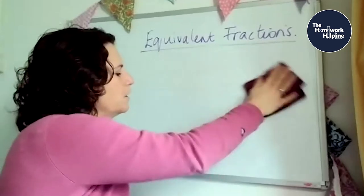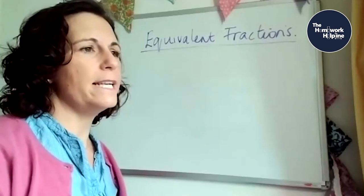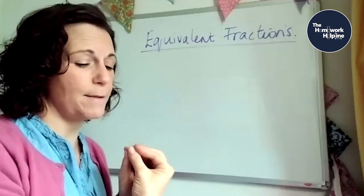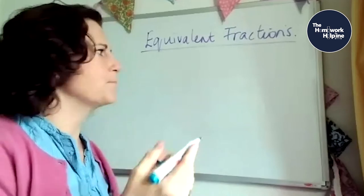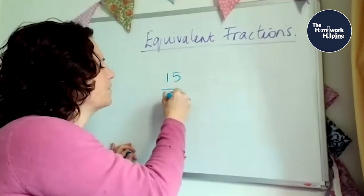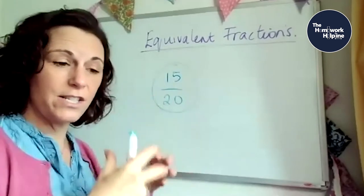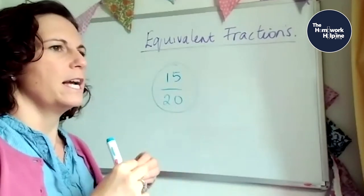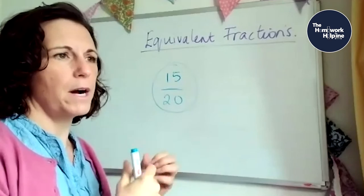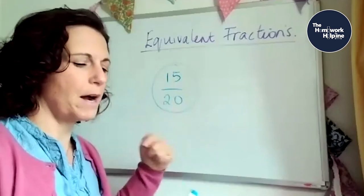Okay, so if we have a fraction that is not in its lowest terms or its simplest form, we need to make that fraction, those numbers in that fraction smaller. The fraction itself stays exactly the same, but we need to make the numbers smaller. So very simply, if I started with 15 20ths, if I have that number, I can see that that's not in its lowest terms. So I need to do the opposite of what we were just doing. We were just multiplying both the numerator and the denominator by the same number. Now we've got to divide the numerator and the denominator by the same number.